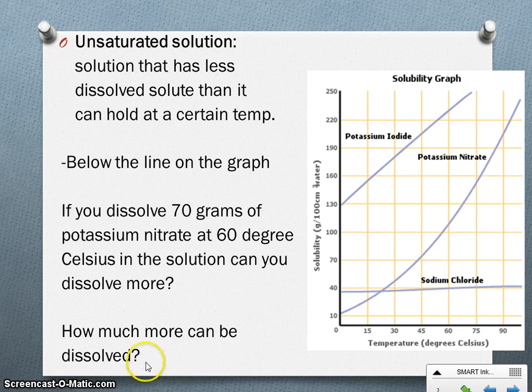Well, how much more could we dissolve then? You can dissolve more until it's full. Well, at 60 degrees, what's the most that will fit in there? We go up to the line—looks like it's about 110. So we only dissolved 70. We could dissolve up to 110. So how much more can we add? That's 40 more grams to go from 70 up to 110.